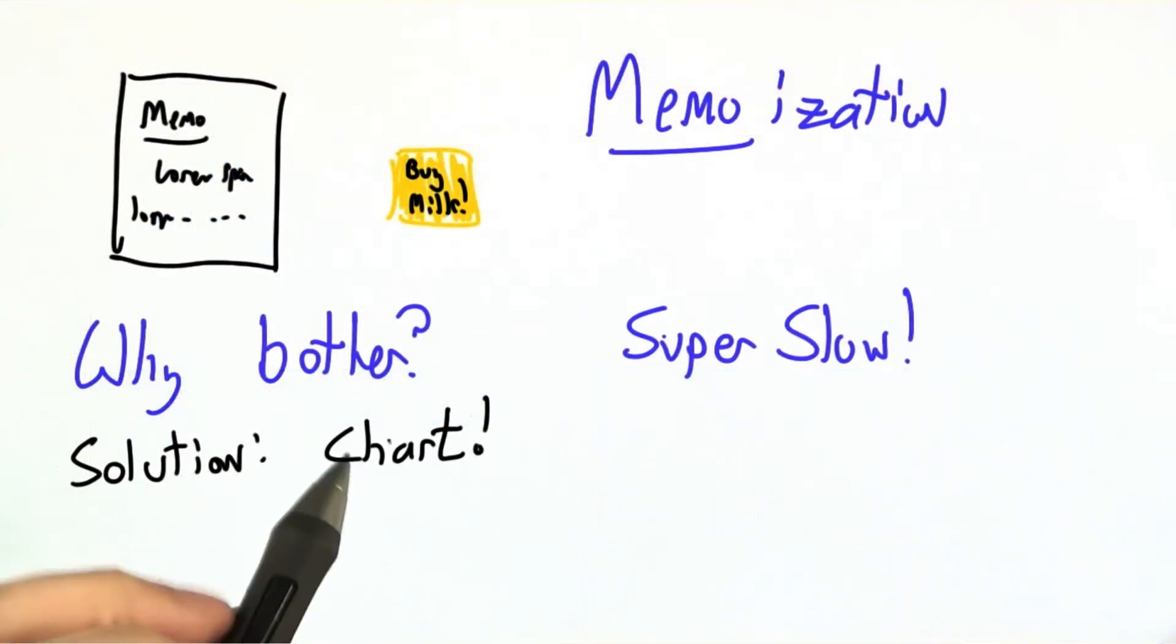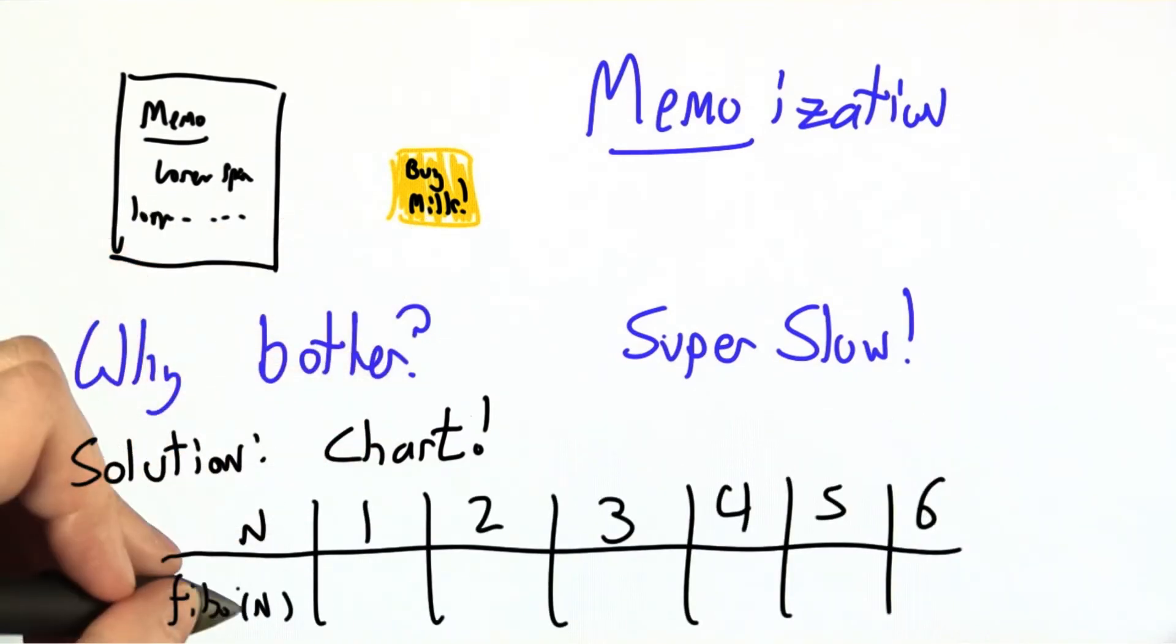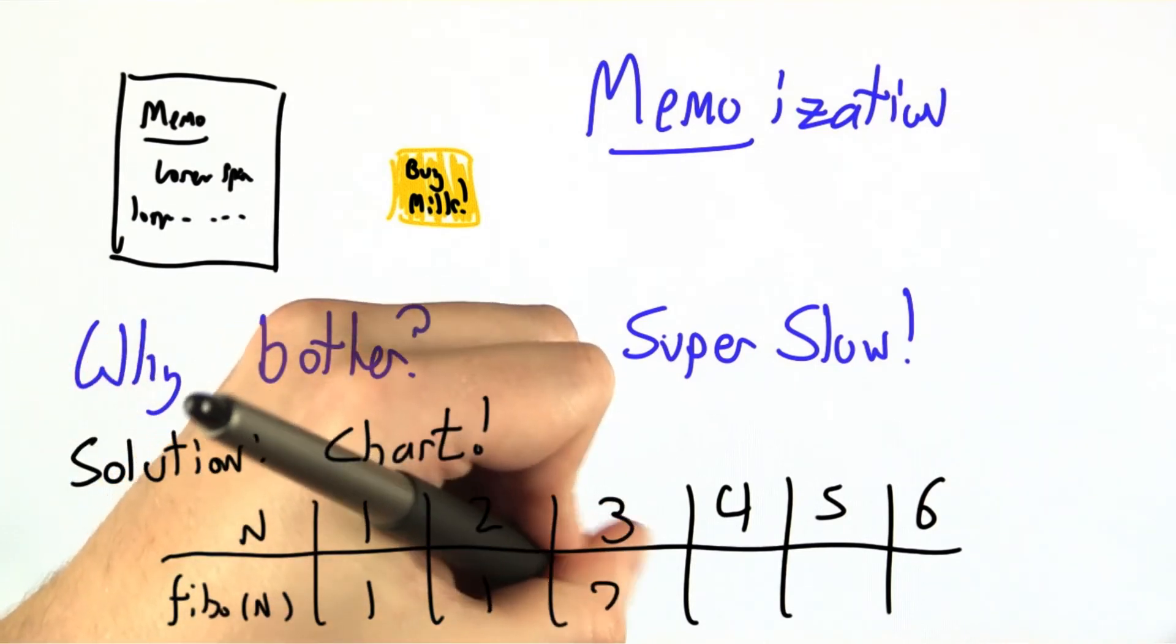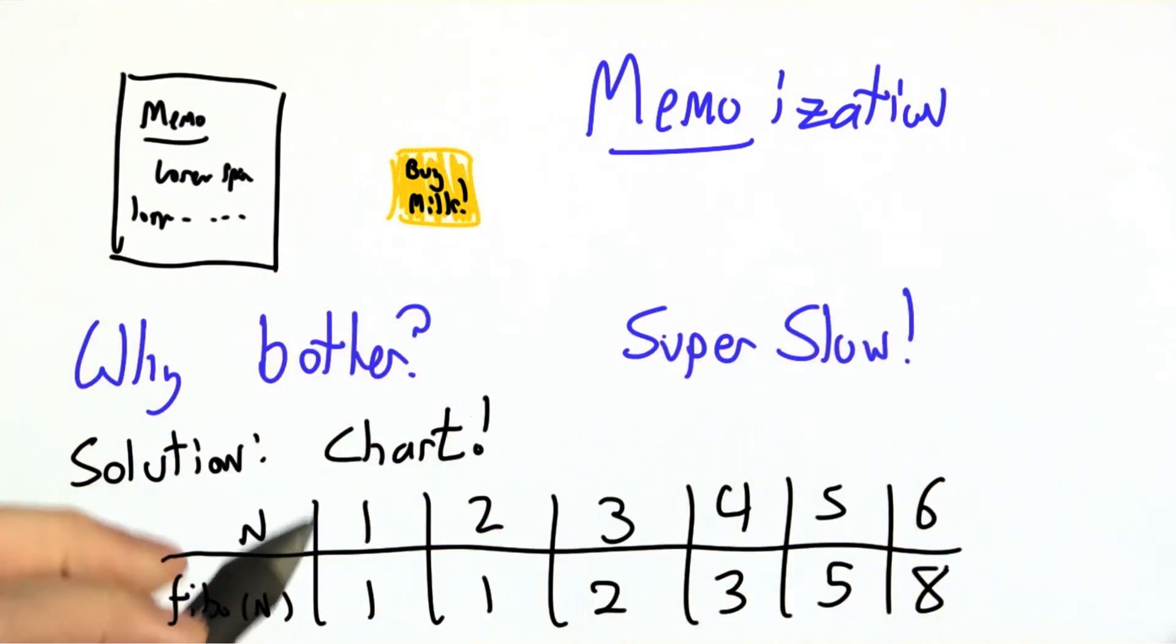Our solution will be to write it down in a chart or a little memo to ourselves. I'll just make a table mapping n to the value of Fibonacci of n: 1, 1, 2, 3, 5, 8. And when I'm going to figure these out, I don't have to do a huge amount of work.